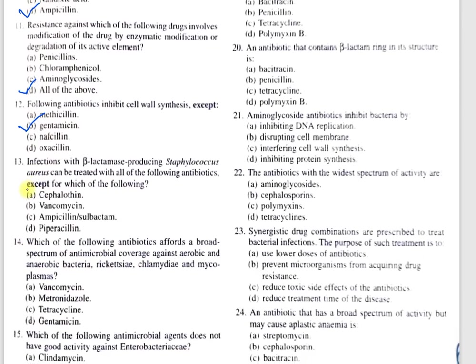Question number 13: Infections with beta-lactamase producing Staphylococcus aureus can be treated with all of the following antibiotics except — A, cephalothin; B, vancomycin; C, ampicillin-sulbactam; D, piperacillin. The correct option is D, piperacillin. Piperacillin is also a penicillin class antibiotic, so the beta-lactamase enzyme will render it ineffective. Ampicillin-sulbactam can be used because it is a combination of a penicillin and a beta-lactamase inhibitor.